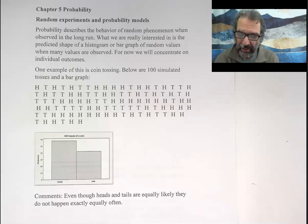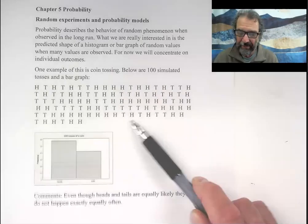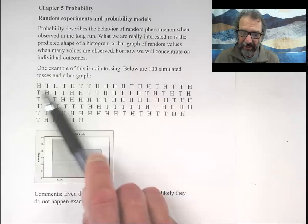One example of this type of experiment and outcome we might study is coin tossing. Here we have 100 simulated tosses and a corresponding bar graph. So here's the results of 100 tosses. H is heads, T is tails.